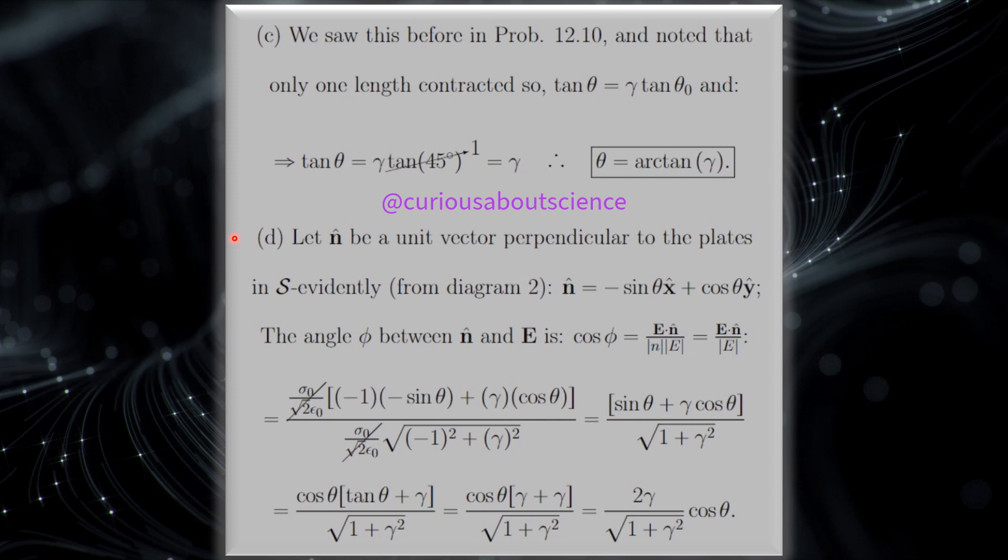And then in D, let n̂ be the unit vector perpendicular to the plates in S. Evidently, from diagram 2, which we just saw in the last slide, n̂ is equal to negative sine θ x-hat plus cosine θ y-hat. The angle φ between n̂ and E is: cosine φ is equal to the dot product E dot n̂ divided by the magnitudes of n̂ and E respectively. But of course, since n̂ is a unit vector, its magnitude is 1. So we're left with cosine φ is equal to E dot n̂ over |E|.